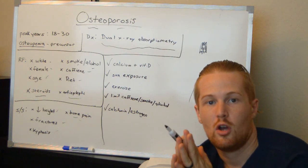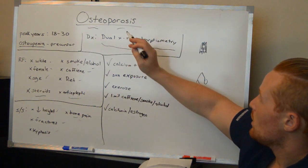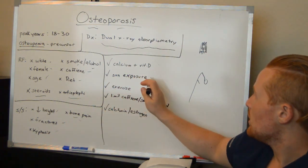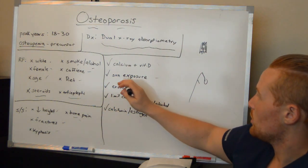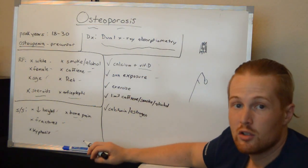So what is treatment for osteoporosis? Well calcium and vitamin D for sure. Make sure they have that in the diet. Make sure you get sun exposure because when you're exposed to the sun your skin and the vitamin D react to help it work better for you.